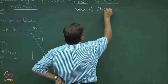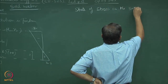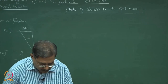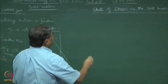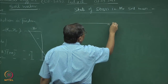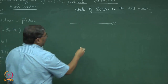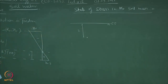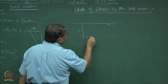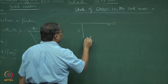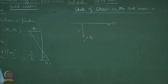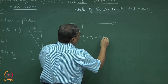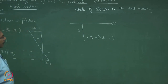State of stress in the soil mass — let us start with a simple ground surface. At a depth z, I want to find out the state of stress. This state of stress is normally defined as sigma. If I define this as point P, sigma_P — as long as it is dry, sigma_P will be equal to γ_dry times z. This is the state of stress at this point.